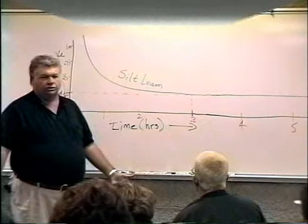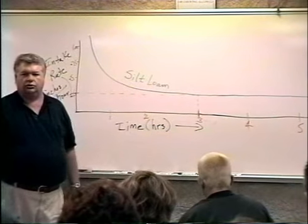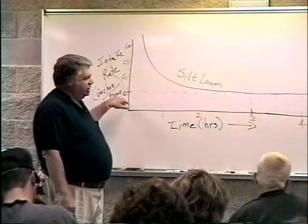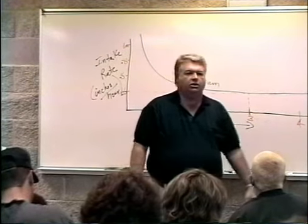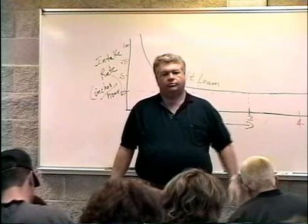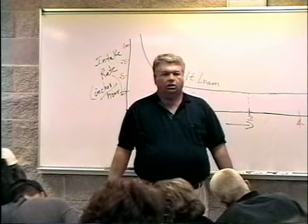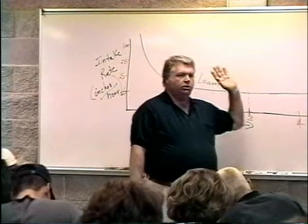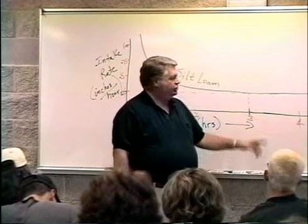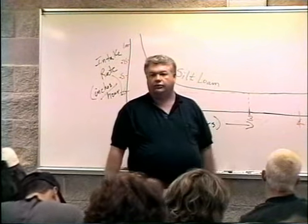If you looked up Walla Walla silt loam or Palouse silt loam, the constant intake rate — once the soil is at field capacity or near saturation — will be a quarter of an inch an hour. So we can put out a hand line system, wheel line, solid set, turn it on and let it run one, two, three, four, eight, twelve, twenty-four, forty-eight hours. It'll just keep taking water once it hits its constant rate at about a quarter of an inch an hour.